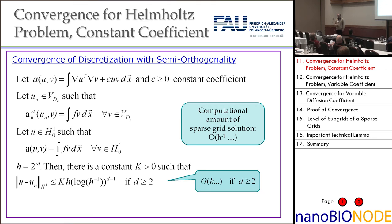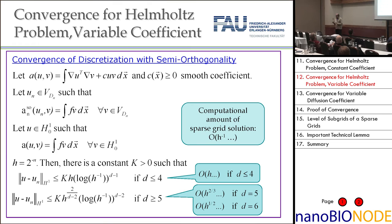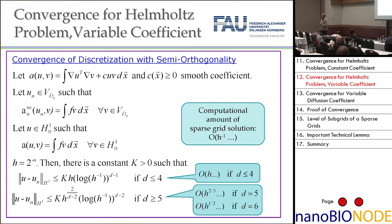What happens with variable coefficients? With a Helmholtz term and smooth variable coefficient, we can show we get the same order of convergence up to order 4. For higher orders the variational crime has some influence, but I think it's not too bad. For very high-dimensional problems with variable coefficients, being able to solve them in an extremely fast way with such a simple method is already a great result.